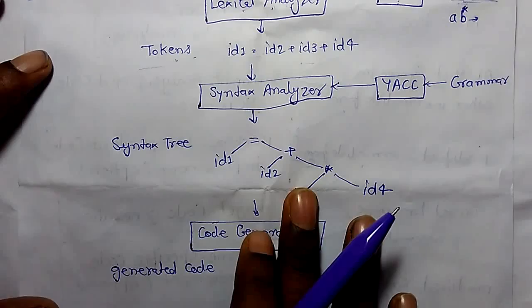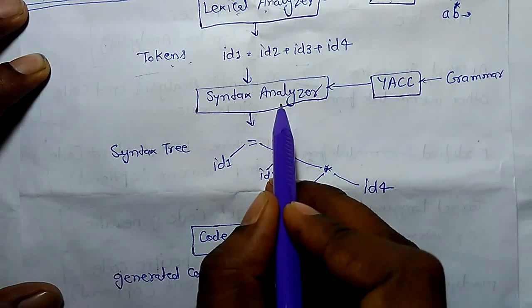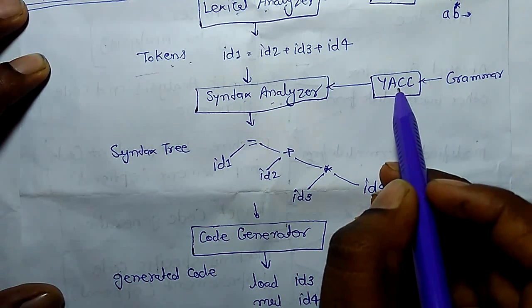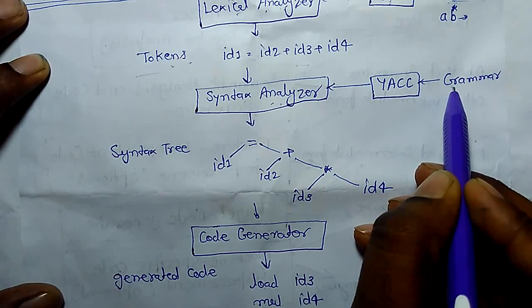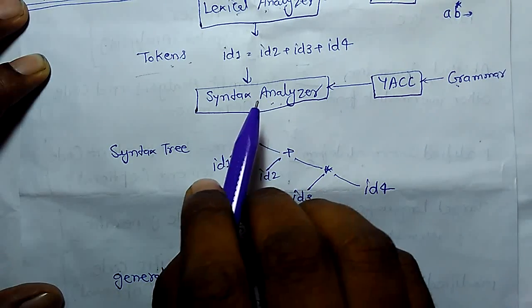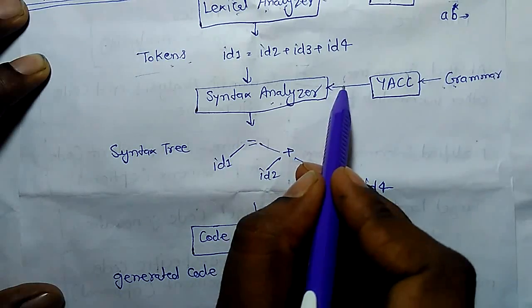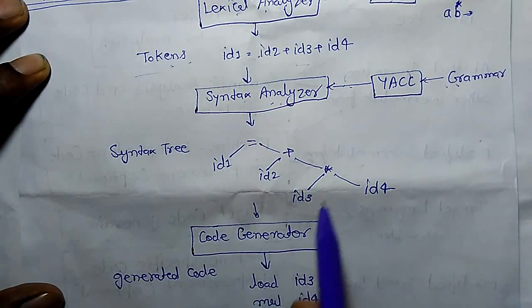Syntax analyzer. And this token is an input for syntax analyzer and this syntax analyzer takes help of YACC which takes input as a grammar and YACC generates output as a parser, and parser creates a syntax tree.